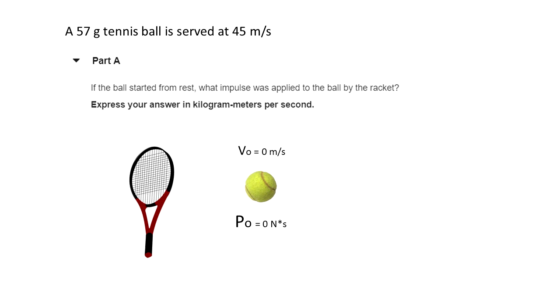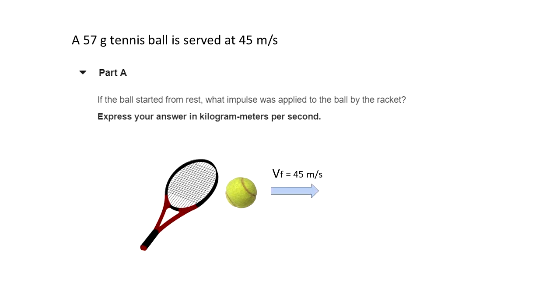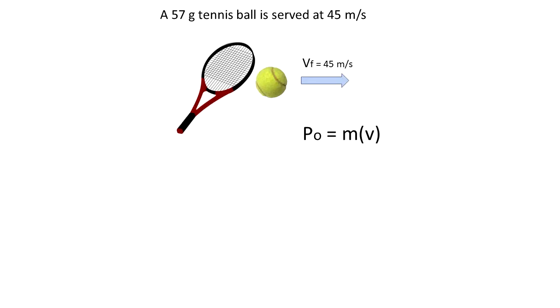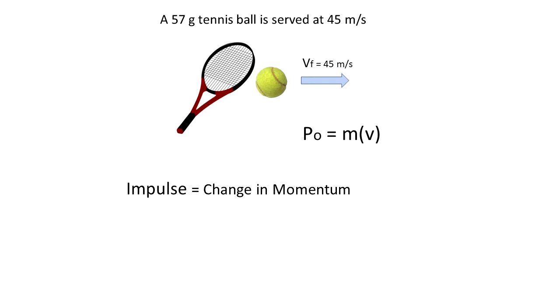And velocity final is going to be 45 meters per second. We know that momentum is defined as mass times velocity. And impulse is defined as the change in momentum.